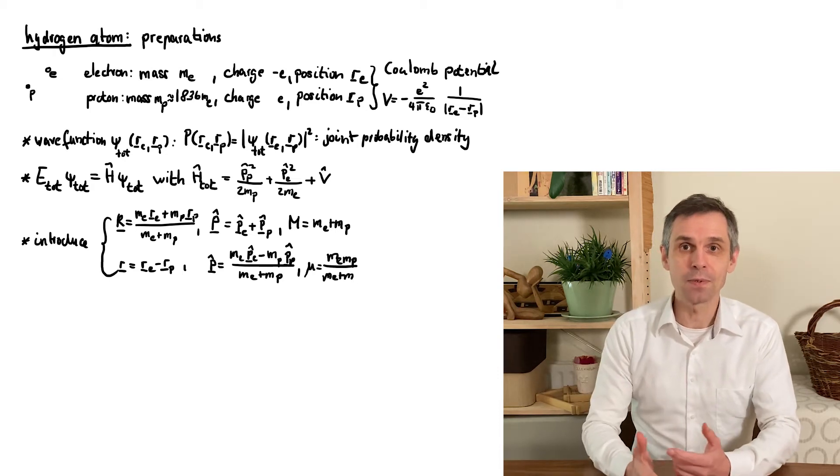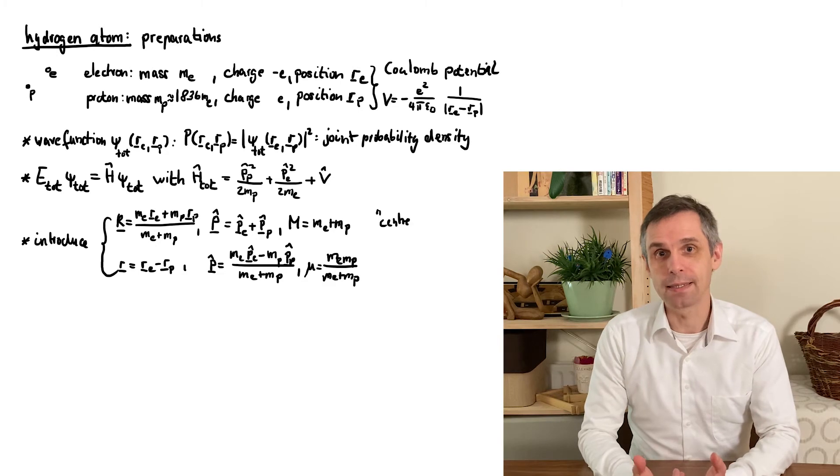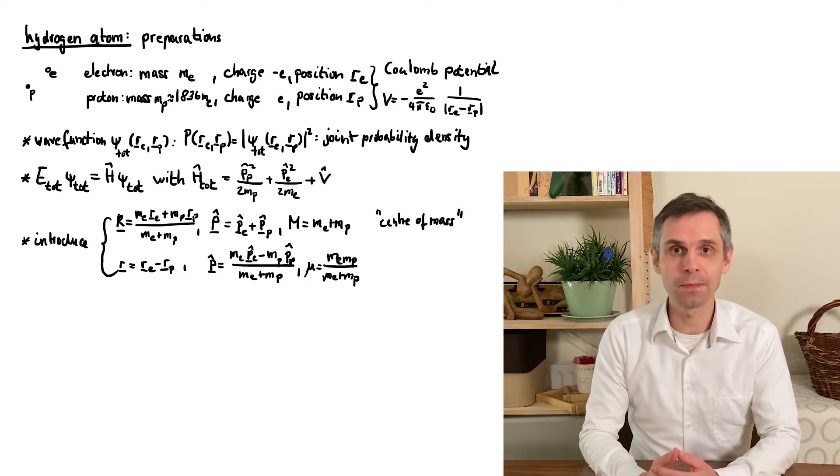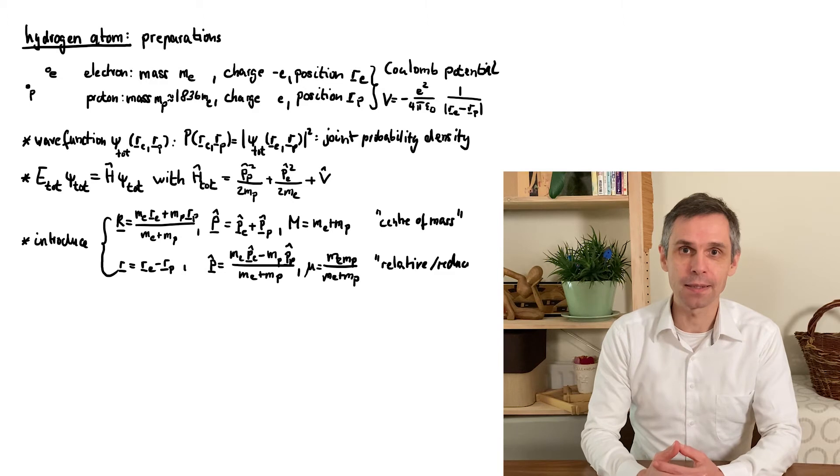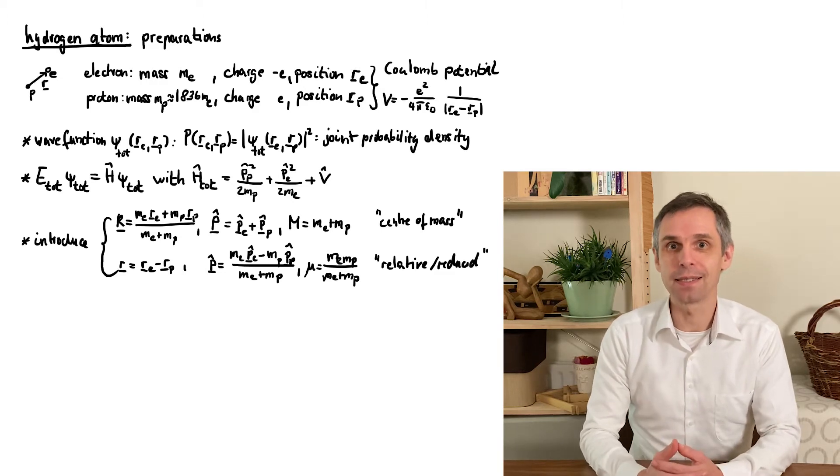These are exactly the same quantities that we would introduce to study the gravitational two-body problem, which then reduces to the motion of a particle around a mass centered at the origin.